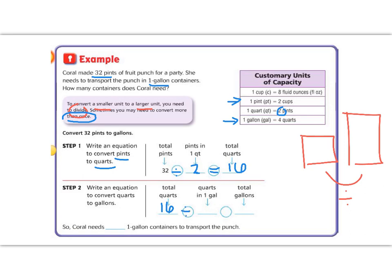So 4 equals 4. So that means that Coral needs 4 one-gallon containers to transport all of the punch.